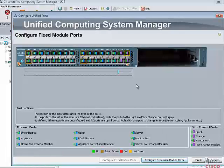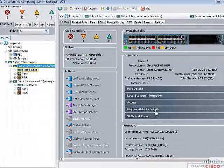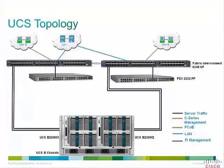Port mode changes on the fixed module will reboot the Fabric Interconnect. Port channel configuration and server link failover will minimize the disruption if configured on the Fabric Interconnect cluster. Revisiting our topology diagram, we need five ports in the Fabric Interconnect: two for IOM on the B-Series chassis, one for the 2232 FEX — these are southbound server ports — plus an uplink port for Ethernet and an uplink port for fiber channel traffic.